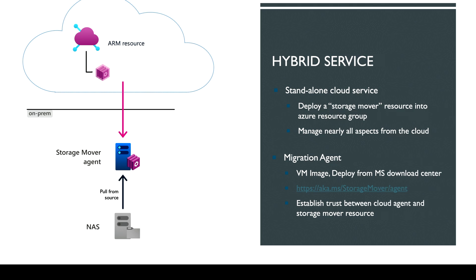If you go SMB, then you're going to go to Azure Files. If you go NFS, it's going to move files to Blob as well. This is why it's called a hybrid service — because it is an on-prem system. There's a VM that you have to load on your Hyper-V or your VMware environment, and that acts as the agent that is going to move the data up to the cloud. This is a perfect service if you're going to move data from a NAS environment to Azure storage.